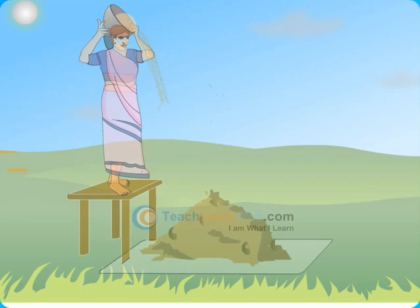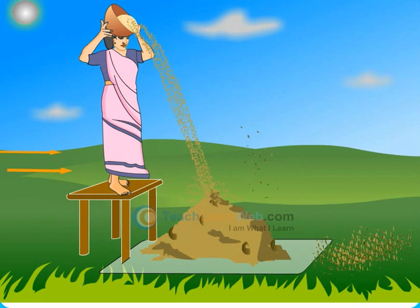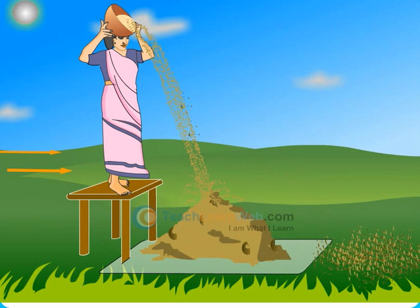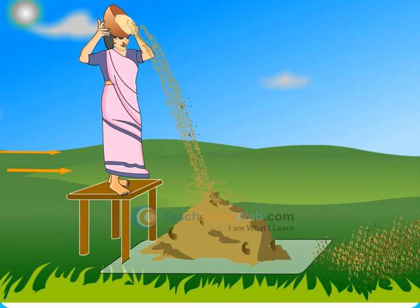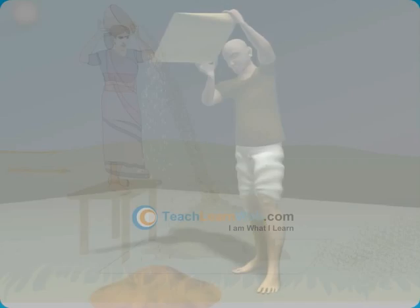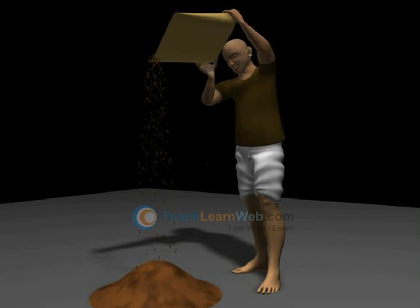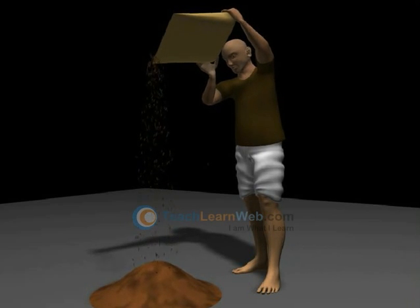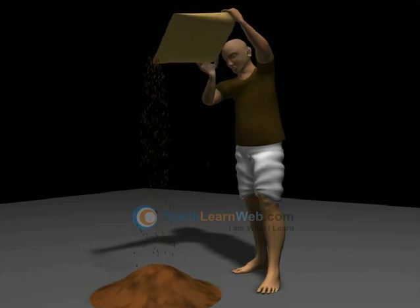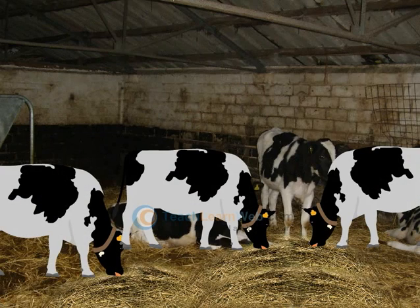Winnowing is the process used to separate heavier and lighter components of a mixture by blowing air. Farmers use this method to separate lighter husk particles from heavier seeds of grain. The separated husk is used as fodder for cattle.